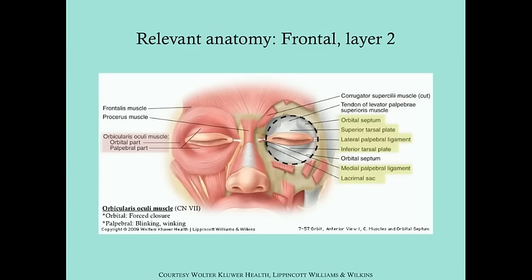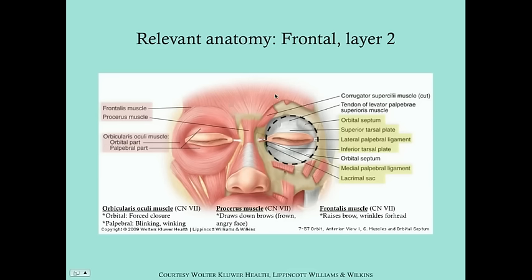You have three muscles here, all of which are innervated by the facial nerve. You have the orbicularis oculi muscle, which is traditionally divided into two parts. There's the orbital part, which is responsible for forced closure — that's more on the periphery — and then closer to the eyelids is the palpebral part, which is responsible for blinking and winking. The procerus muscle sits on the nasal bridge and is responsible for drawing down your brows, helping you make a frown. And the frontalis muscle is on the forehead, which helps you raise your brows and wrinkle your forehead.